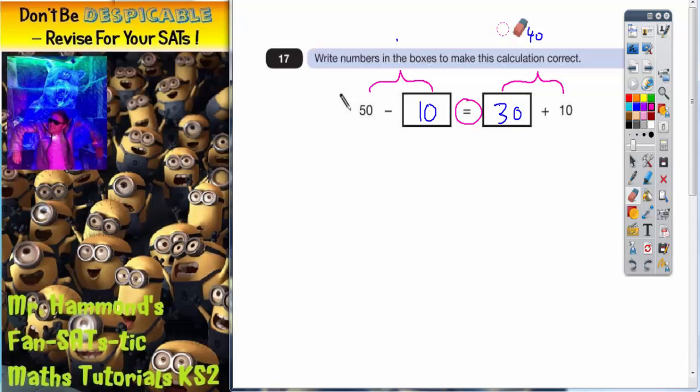Let's just rub out those 40s and think about another possible set of answers. Well, if you put 20 in here, 50 take away 20 would now make it 30.